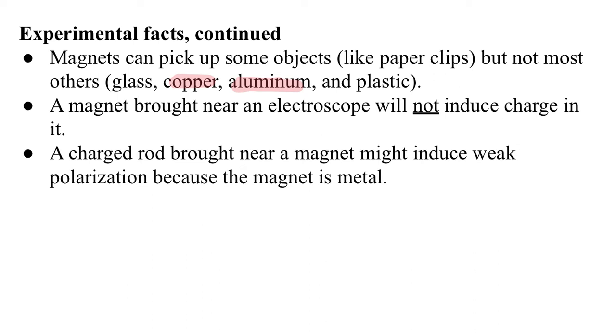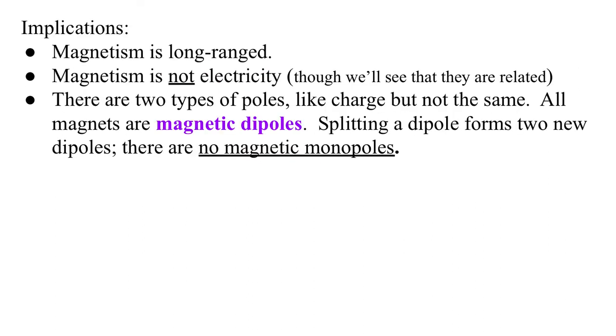And then finally, a charged rod brought near a magnet might induce a weak polarization, but only because the magnet is metal. It doesn't seem to have any strong attractions based on charges. What does all that mean?